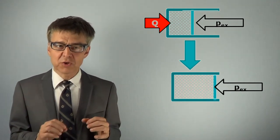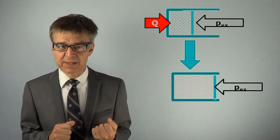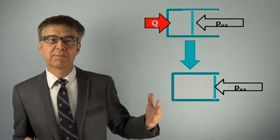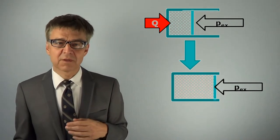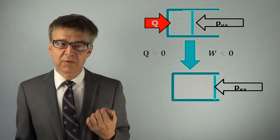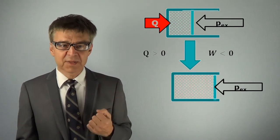Work has been done by the system, so the sign convention calls for W to be negative. Heat has been absorbed by the system, Q is positive. The process is an endothermic one and work has been done.